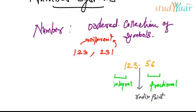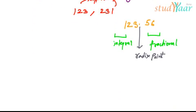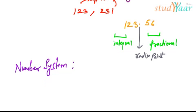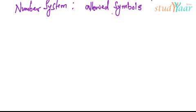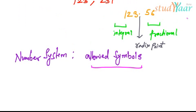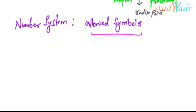Now that we have defined what a number is, let's understand what we mean by a number system. A number system is something that allows me to specify the allowed symbols. Allowed symbols means the number of symbols that we can use to form a number. For example, in our day-to-day life we use the decimal number system, and the decimal number system has 10 allowed symbols.